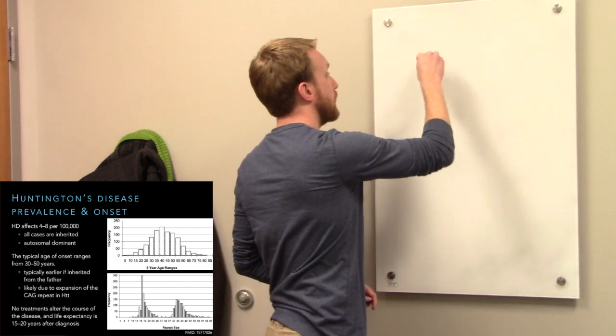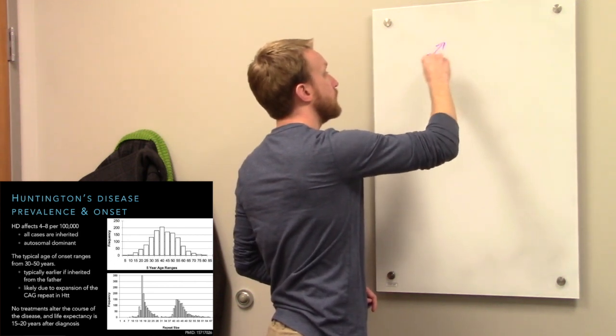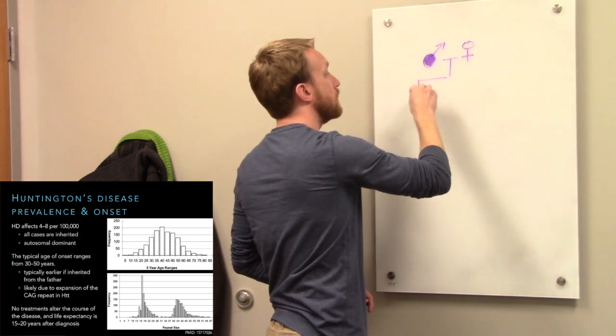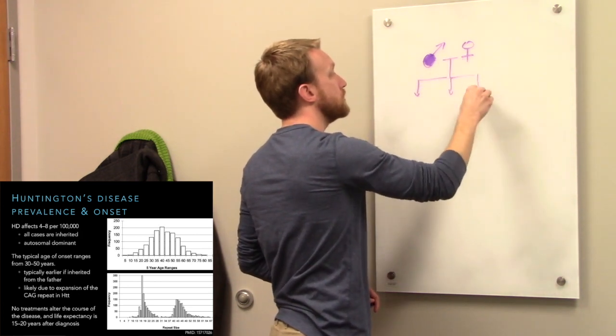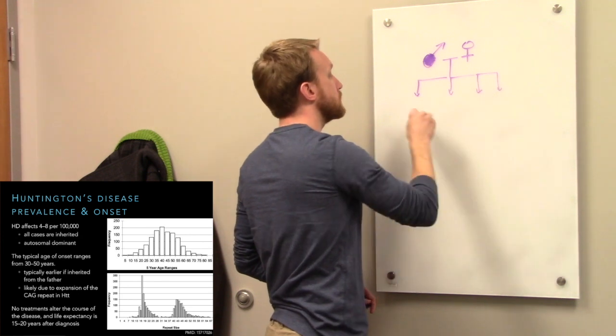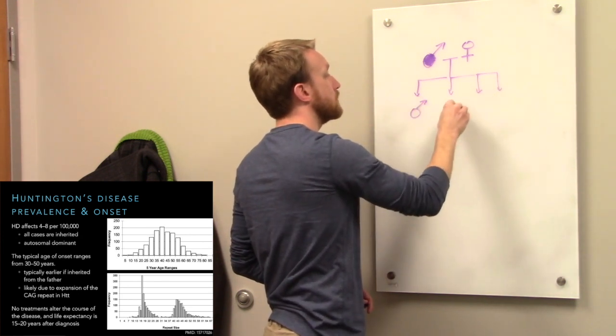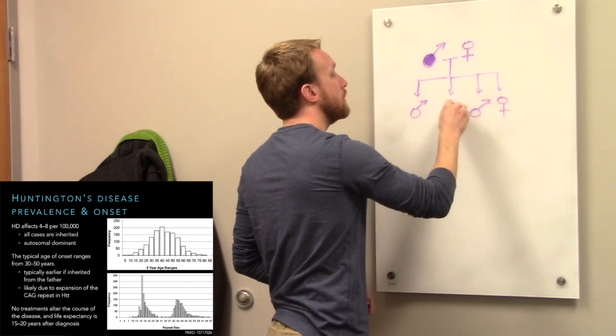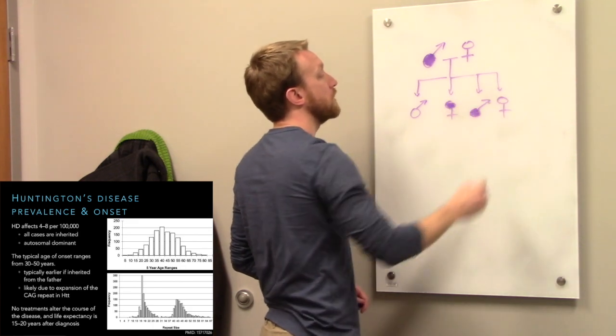So if we have an affected father, then half of the children, regardless of sex, will be affected. And it's just kind of the flip of a coin.